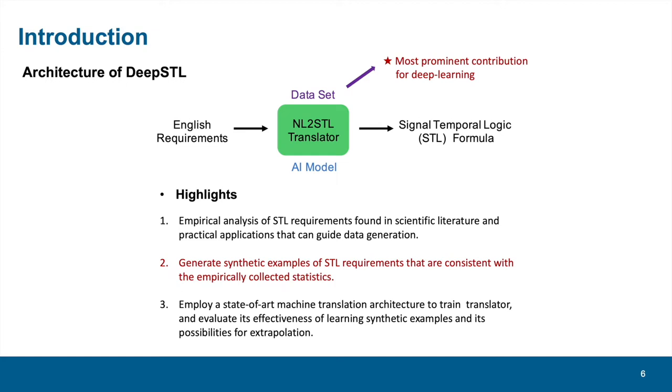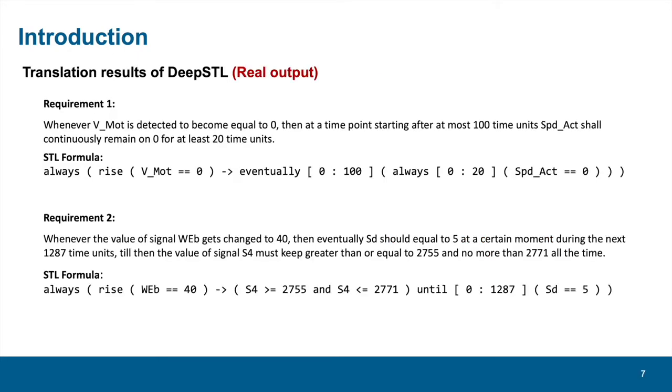In order to develop such a translator, we firstly conducted an empirical study for both STL and English requirements in literature. Then, based on the data obtained in the first step, we developed a dataset generator. Finally, we employed a state-of-the-art AI model to train the translator and evaluated its performance. Before formally moving to these three parts, let's firstly look at the real results output from our translator.